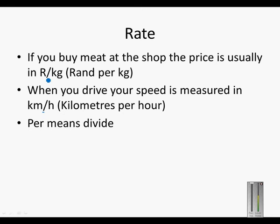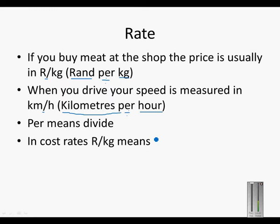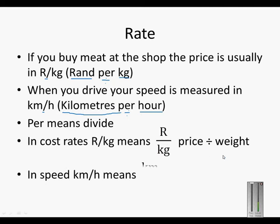This 'per' means divide. So in cost rate it's Rand divided by kilogram, and kilometers per hour it's kilometers divided by hour. So cost rate: Rand per kilogram means Rand over kilogram, or price divided by weight. In speed, kilometers per hour means distance divided by time.